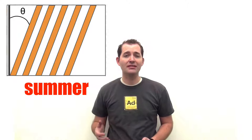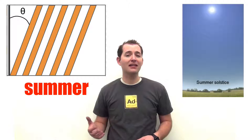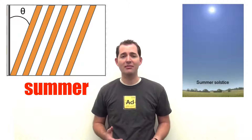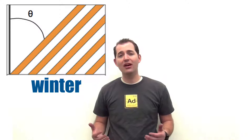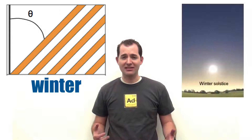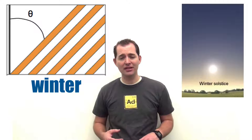Let's look at the angles of incidence during summer and winter to see the temperature differences. Here we have an example of sunlight hitting the Earth's surface during summer, which gives us a small angle of incidence. The physical evidence of this is the Sun being higher overhead during the summer. Here we have an example of sunlight hitting the Earth's surface during winter, where we have a larger angle of incidence. The physical evidence of this is the Sun being lower in the sky during the winter.